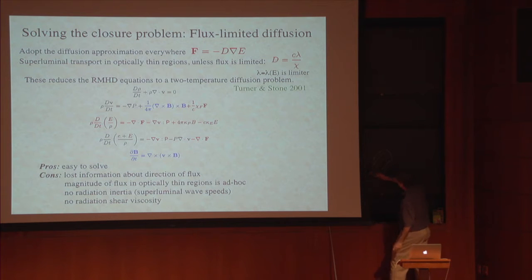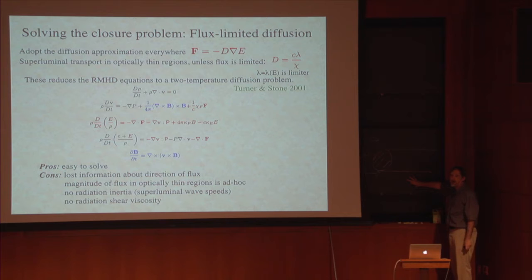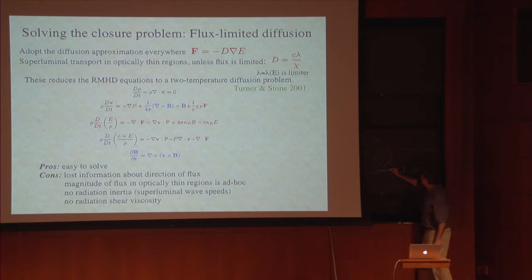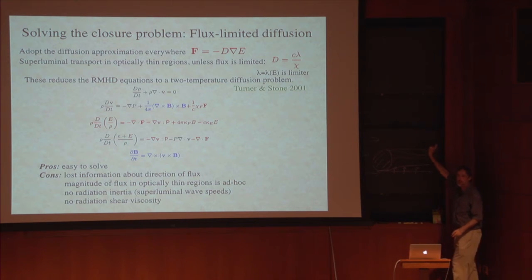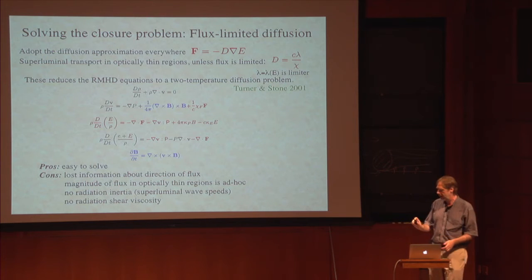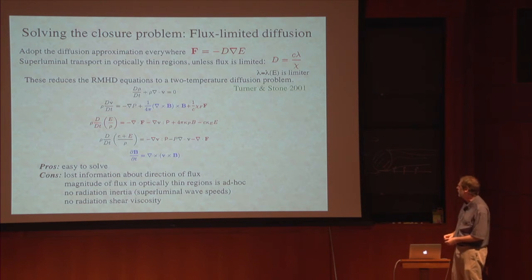Flux-limited diffusion doesn't allow shadows to form in optically thin media. If you have a dense cloud of gas being illuminated by a radiation field casting a shadow, the shadow represents a region of very low radiation energy density while the illuminated parts are very high. The gradient of radiation energy density points from shadow to illuminated region — so FLD will think there should be a large flux in that direction and it will fill in over time until the radiation energy density is uniform everywhere and there's no shadow. This is a consequence of having the flux given by the gradient of E, and it's unavoidable.